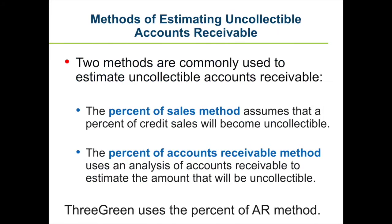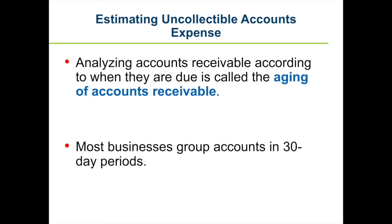A business may use either the percent of sales or percent of accounts receivable method; regardless of the method used, it must ensure a reasonable and unbiased estimate. 3Green uses the percent of accounts receivable method. The first step in this method is to total accounts by age groups — analyzing accounts receivable by when they are due is called the aging of accounts receivable. Most businesses group accounts in 30-day periods.